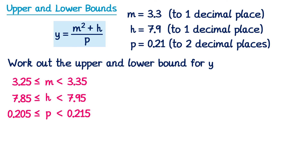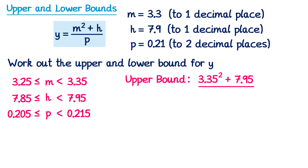Looking at the formula y = (m² + h) / p, we have a division — the numerator divided by the denominator. Divisions are tricky, so we need to be careful. For the upper bound, we want the numerator as large as possible and the denominator as small as possible. So we use the upper bound of m and h and the lower bound of p: (3.35² + 7.95) / 0.205. A calculator gives the upper bound.